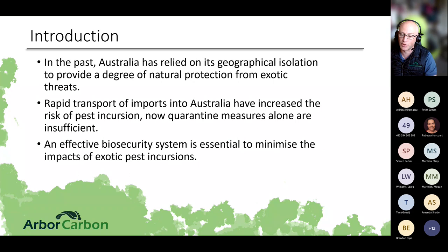An effective biosecurity strategy is essential to minimize the impacts of exotic pest incursions. This can be pre-border, at-border, or post-border. The three pillars of biosecurity are: restrictions on material and products entering Australia; border protection at the border when arriving by plane; and work done by biosecurity agencies in each state, as well as by the general public in reporting and identifying pests and pathogens.